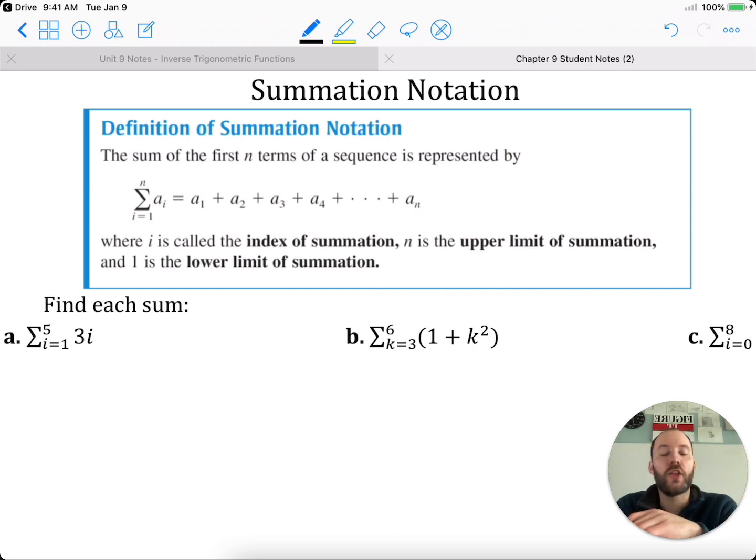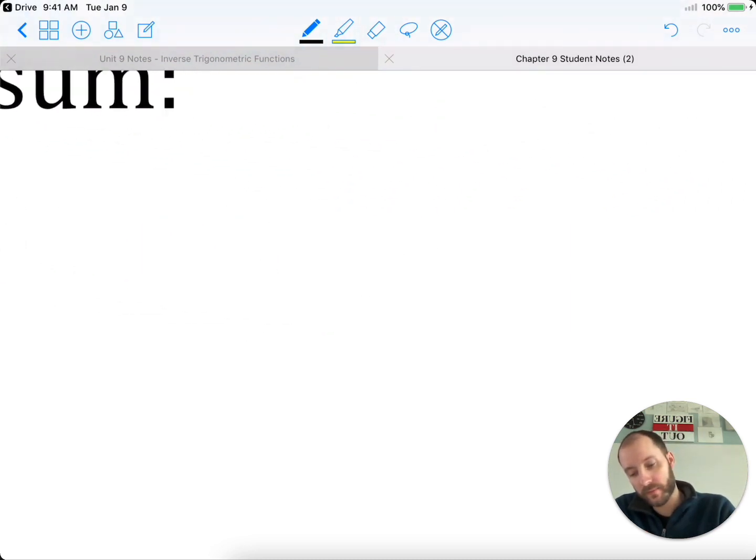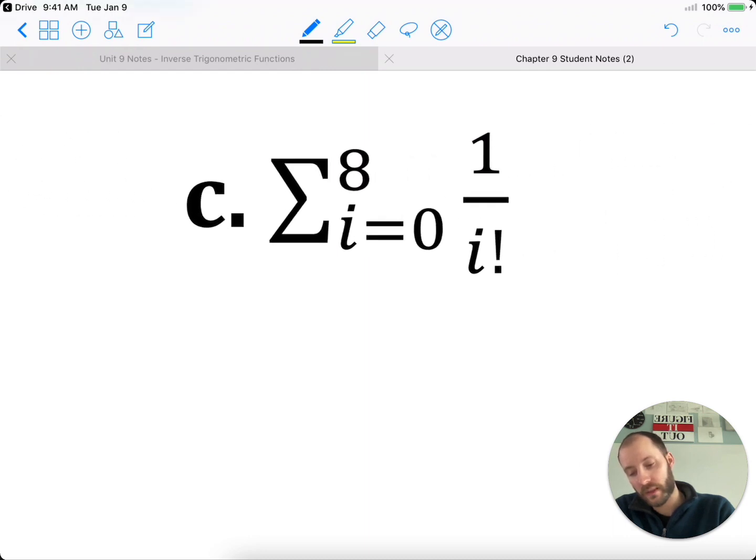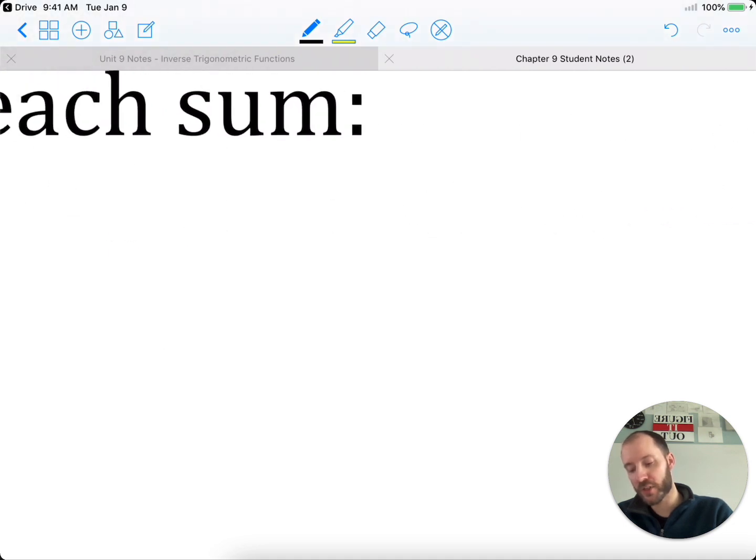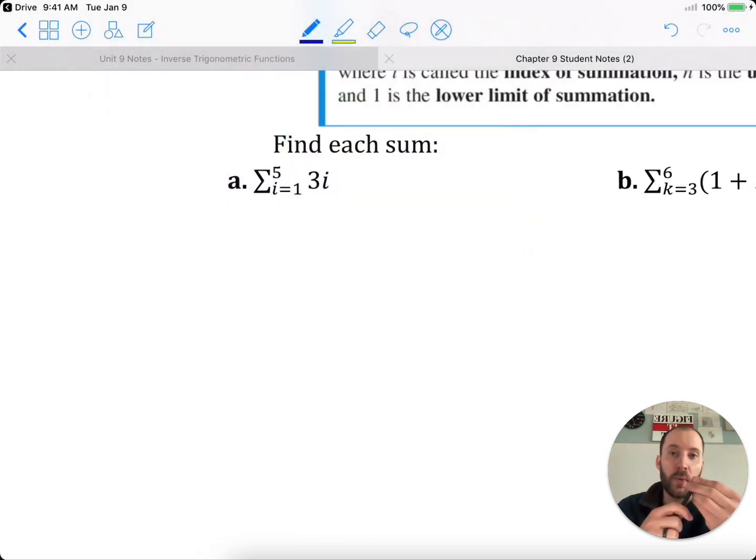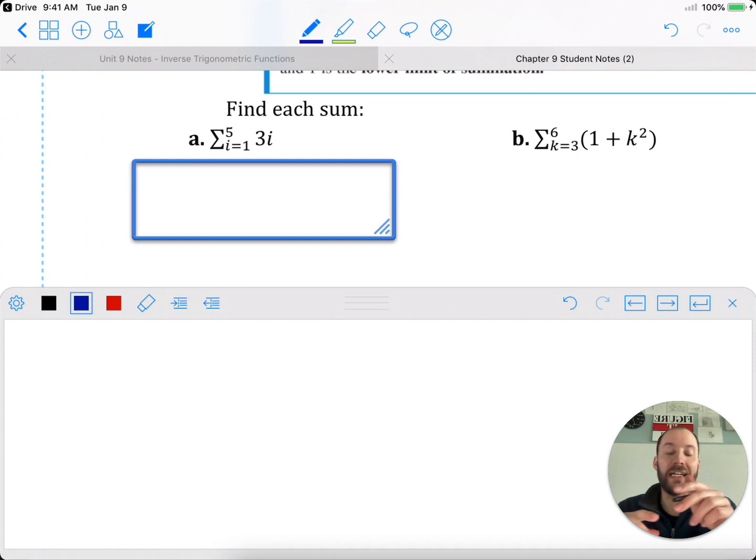Summation notation. Let's say we want to take all the terms of a sequence and add them up. From the first term. Now the first term is your lower bound. Here, your first term is 1. Here, your first term is 3, plugging 3 in. Here, your first term is 0, plugging 0 in. Your first term will not always match your lower bound. Your lower bound tells you what the first term will be. The first term is not always a sub 1. To do a summation, you want all of your terms.